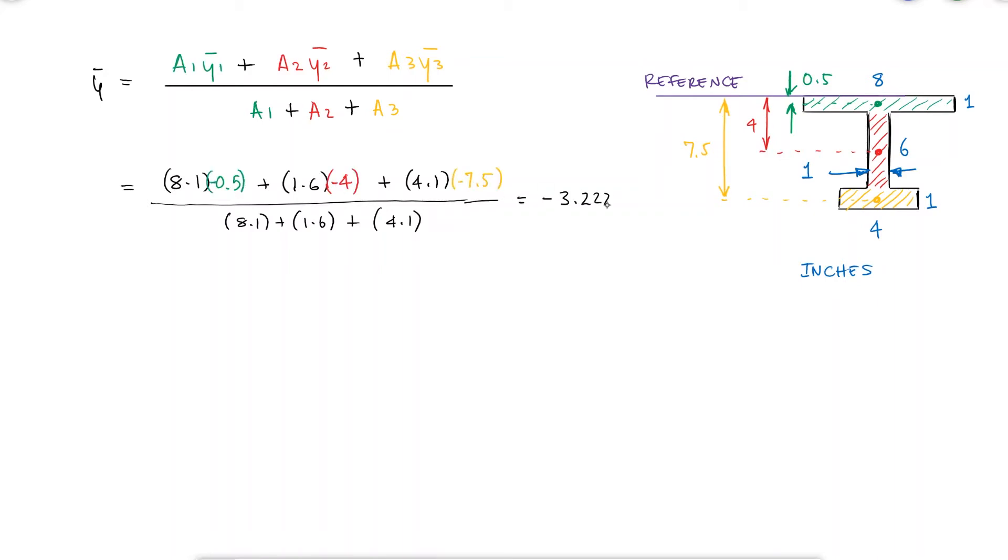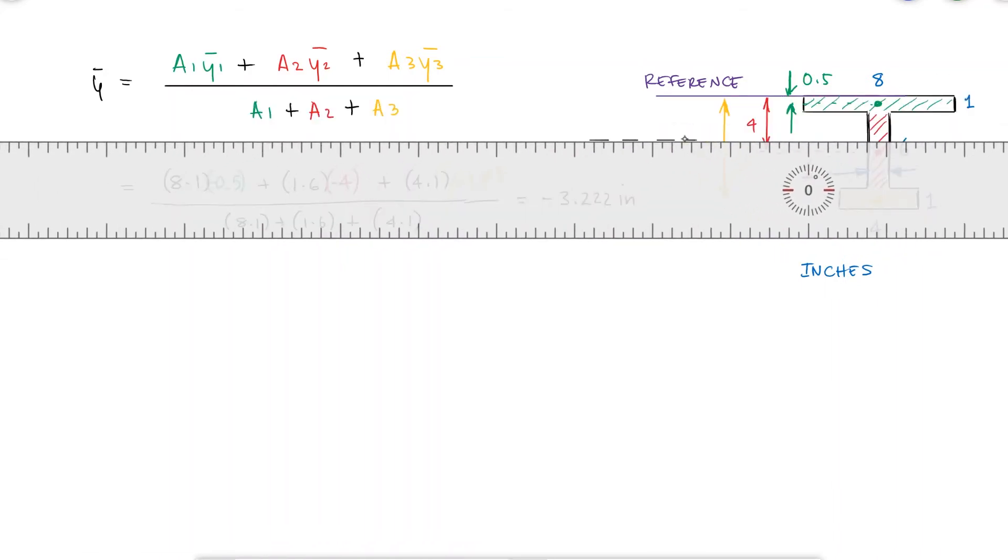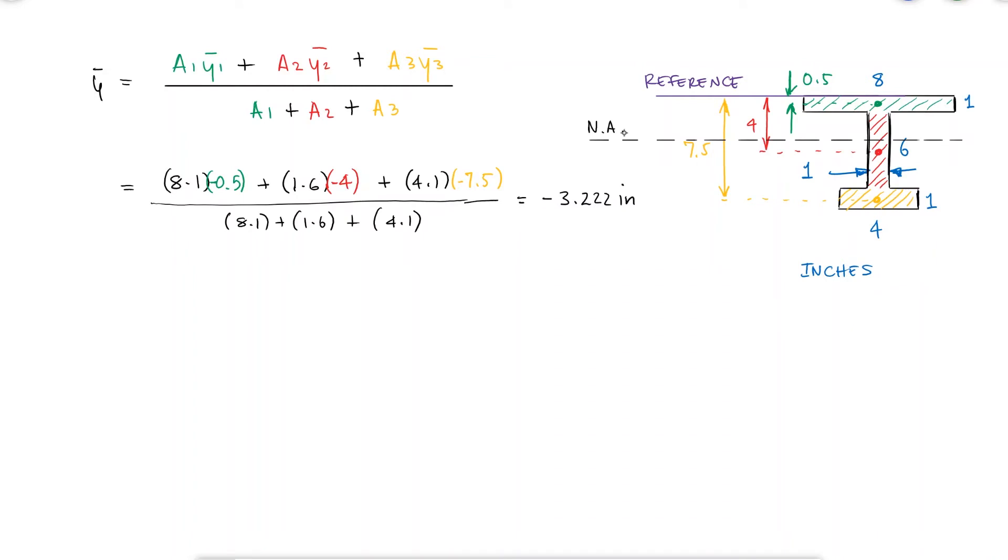The neutral axis is therefore located 3.22 inches below my reference line. This means that the top surface is 3.22 inches above the neutral axis, and that the bottom surface is 4.78 inches below the neutral axis.